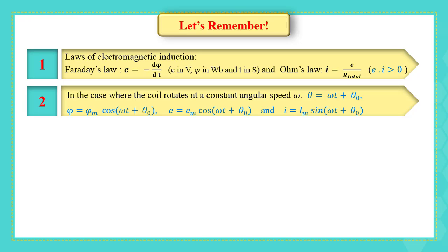Two, in the case where the coil rotates at a constant angular speed omega: theta equals omega T plus theta zero, phi equals phi M cosine omega T plus theta zero, E equals E M cosine omega T plus theta zero, and I equals I M sine omega T plus theta zero.